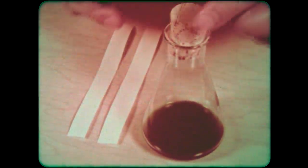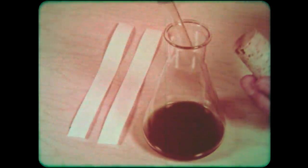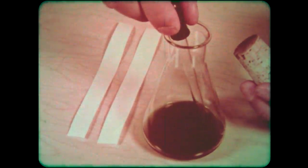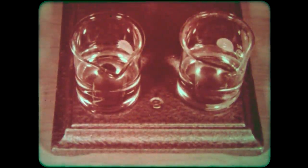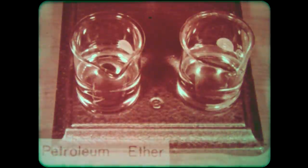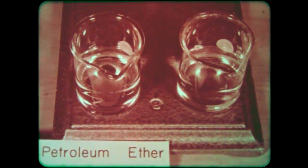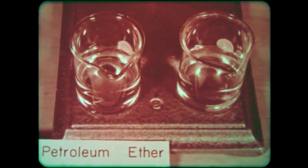A biological substance is now used: chlorophyll extract from the leaves of a Virginia creeper vine. Each spot must be allowed to dry thoroughly before the paper is placed in the solvent. Changing to more effective solvents, petroleum ether is in one beaker and acetone in the other.